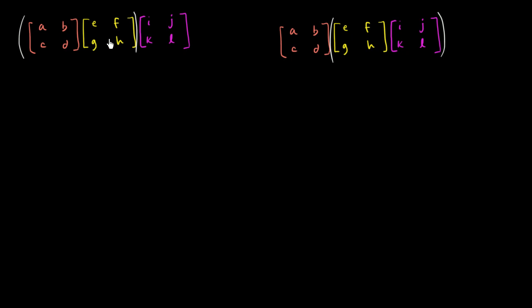All right, so let's multiply these first two. So this product, and I'm going to make it a little bit big. So it's going to be AE plus BG, AE plus BG. Then AF plus BH. And then it's going to be CE plus DG. And then finally it's going to be CF plus DH.